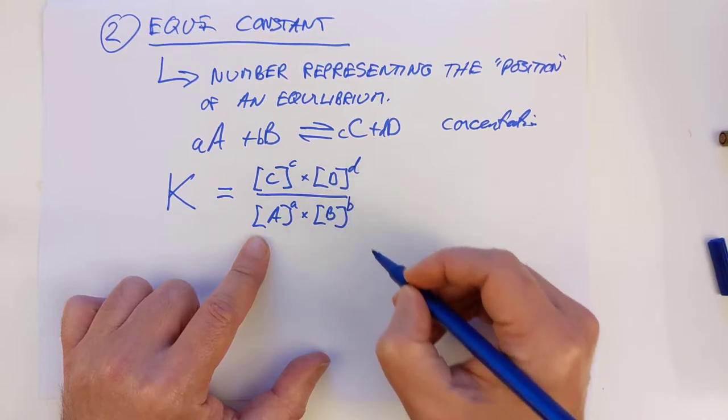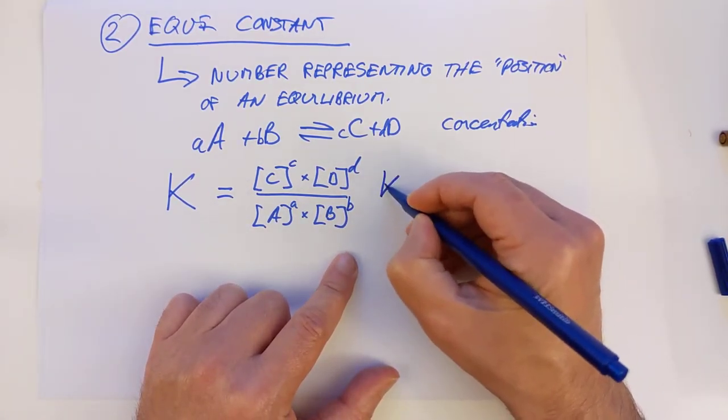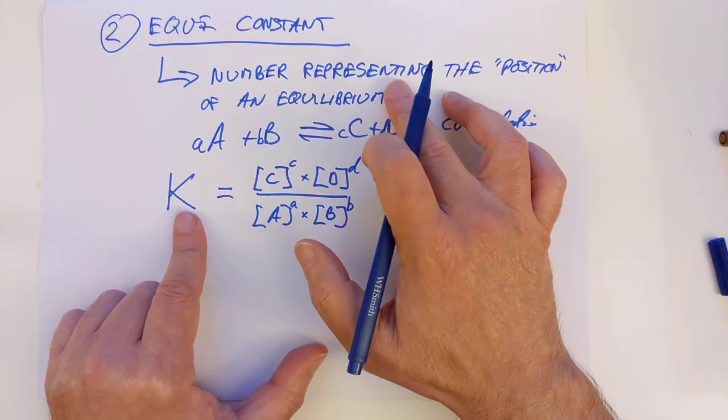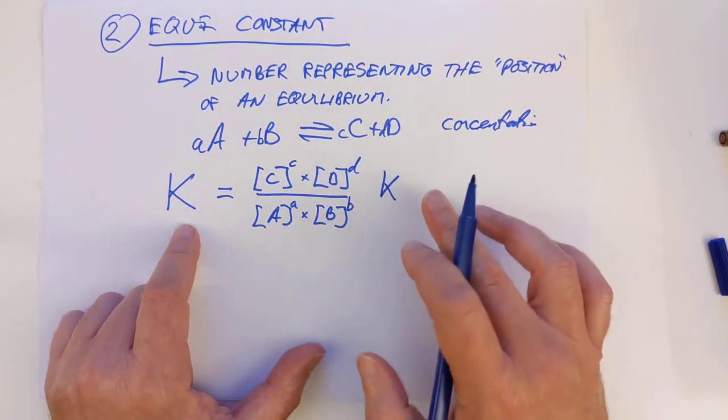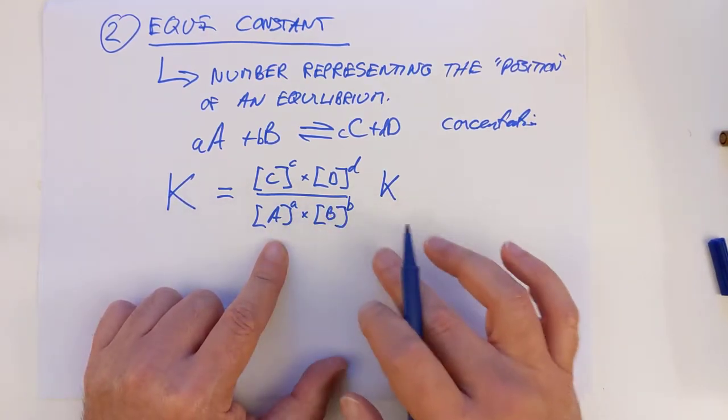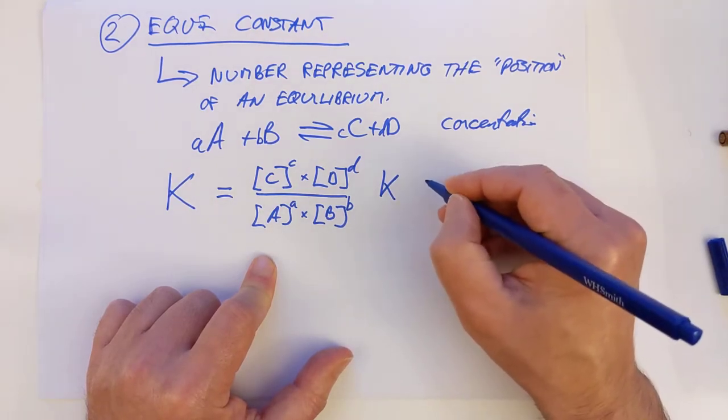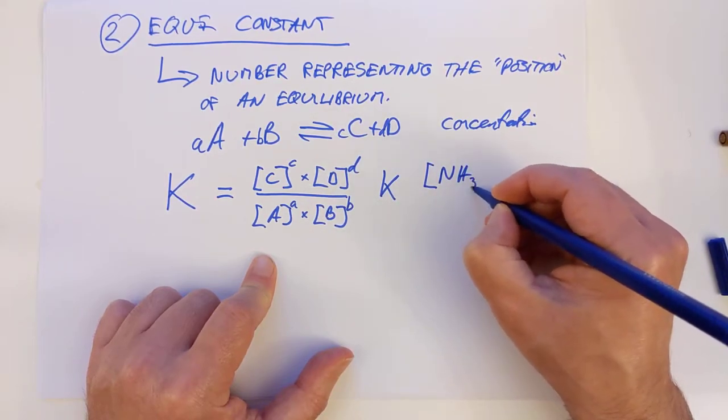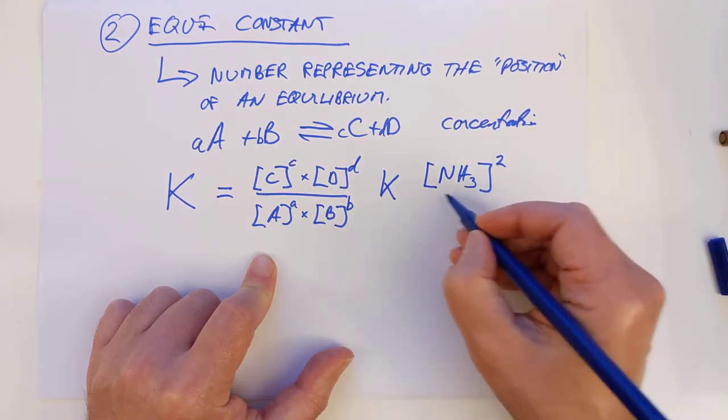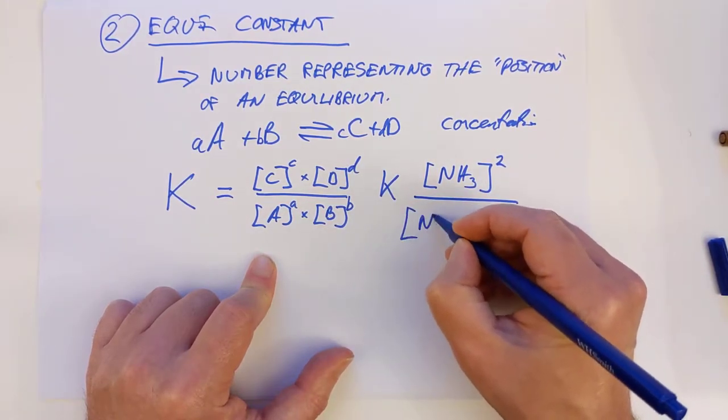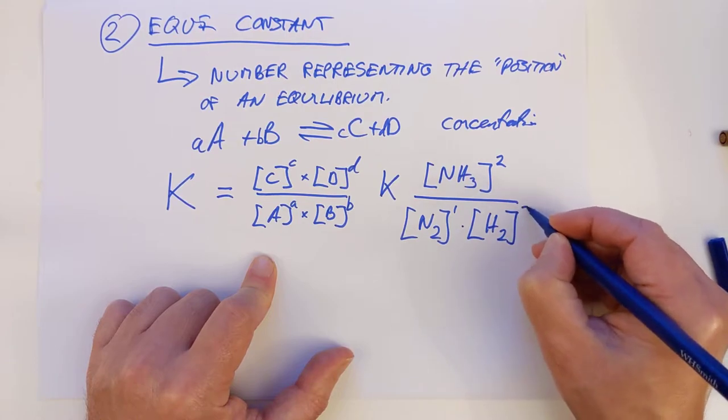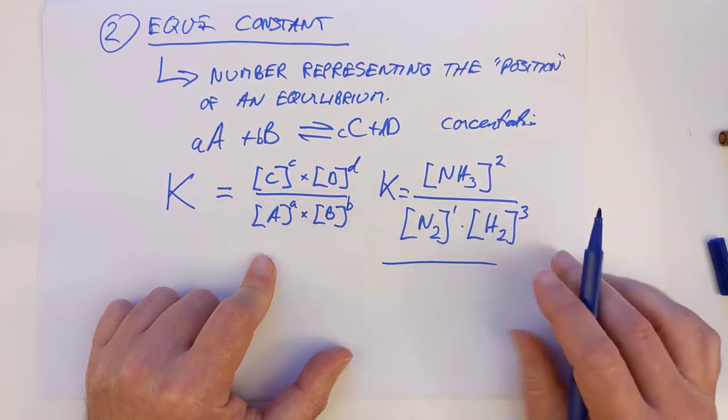Why did I bother putting these little numbers in here? Because they are important, and what we have to do is we have to raise each of these concentrations to the power of this coefficient here. I'll show you exactly what I mean, going back to Haber again. So the equilibrium constant, this is the expression for it. For the Haber process, it would be everything on the right, which is only just one thing, ammonia, raised to the coefficient squared. So the concentration of ammonia squared divided by the concentration of nitrogen to just the power of one, and it was three hydrogens, so that's the concentration of hydrogen gas cubed.